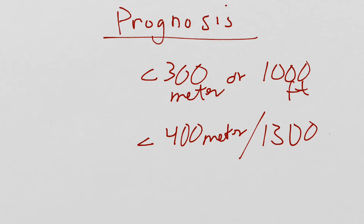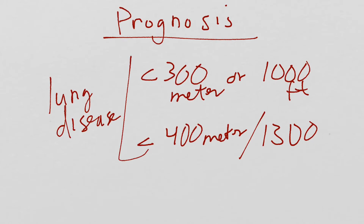The six-minute walk test can also inform prognosis. For patients with lung disease or COPD, studies show that if they're less than 300 or 400 meters, their chance of needing mechanical ventilation or their risk for death is higher. So this can give insight into how your patient is recovering and any risk associated with their condition.